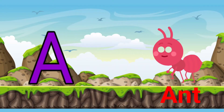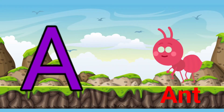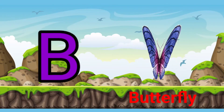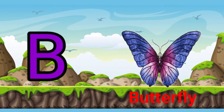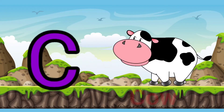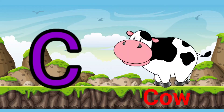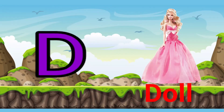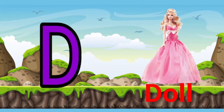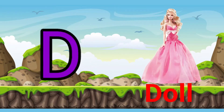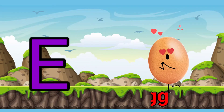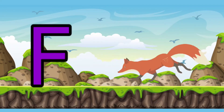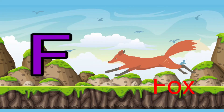A for ant, B for butterfly, C for cow, D for doll, E for egg, F for fox.